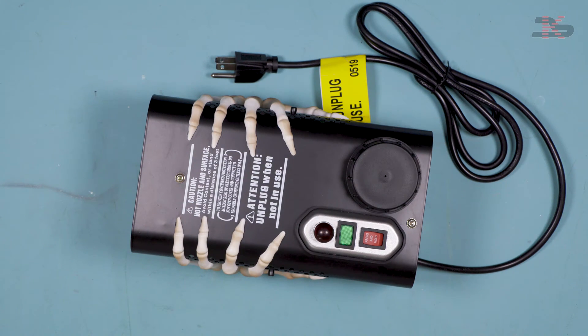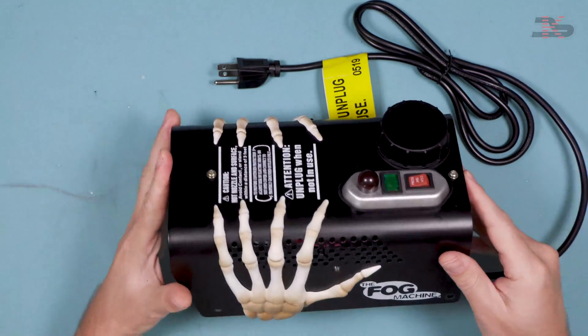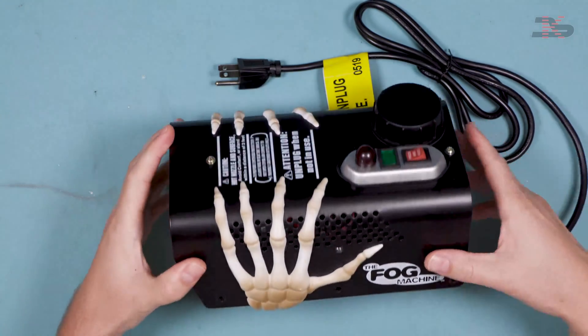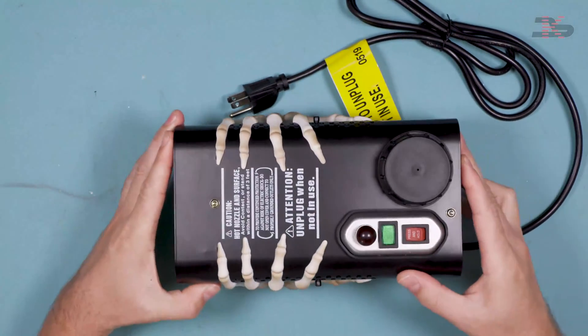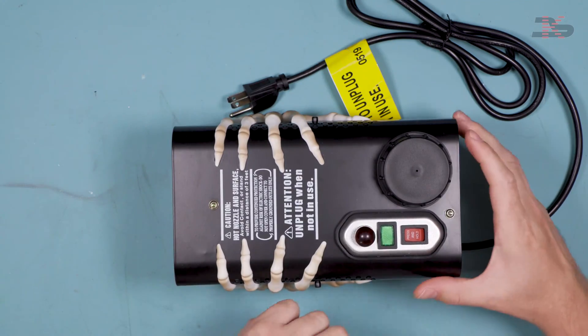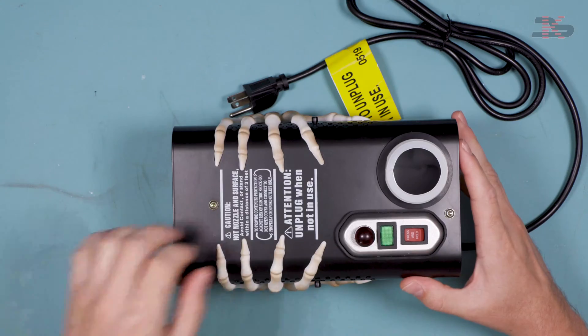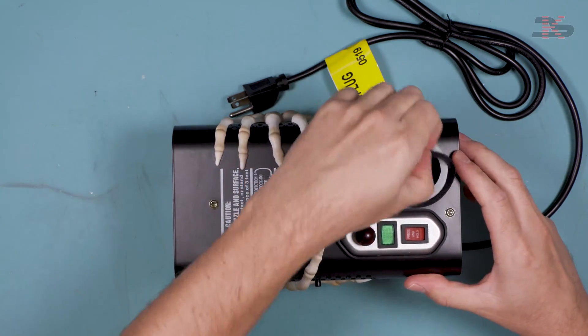To do that we will start by removing the outer case. I've already removed the handle and the three screws on either side. And then there are just two screws on the top as well as this cap and the gasket.